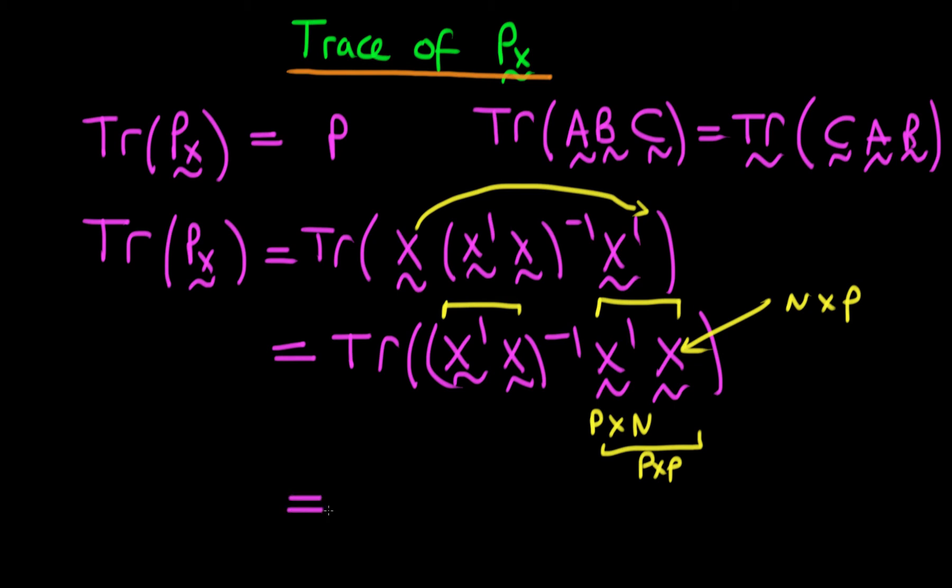So, when we've got a matrix times its inverse, we're just going to be left with the identity matrix. But we've reasoned thus far that this is going to have to be an identity matrix of dimensions P by P. And the trace of an identity matrix of size P by P is just going to be P because we've just got P 1s along the diagonal.